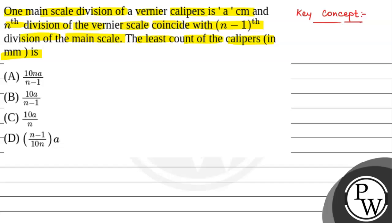The least count, LC, is equal to: one main scale division minus one Vernier scale division. So this is the least count formula for Vernier calipers.